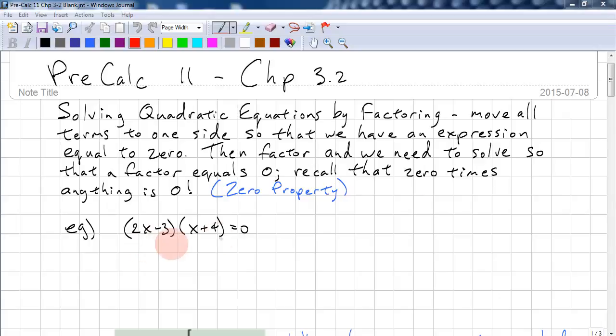In our first example this is already moved over to one side and factored. I'm just going to demonstrate how we get an answer from this. So we have 2x minus 3 equal to zero. So that's one answer. 2x is equal to 3, x is equal to 3 over 2. Please leave your answers as fractions rather than decimals whenever possible. And the other one we have x plus 4 equals zero, and x equals negative 4.